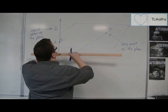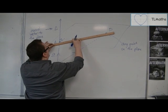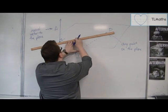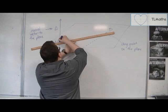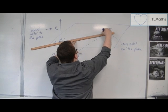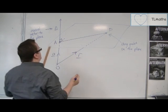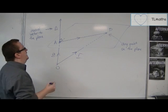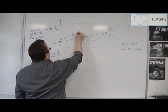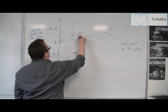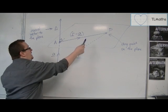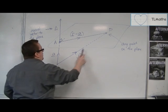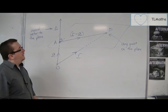Because then what I can do is I can draw in the line going from A to P, so that this vector that gets me from A to P is actually R minus A. So going from A to P, I'm going back along A, so that's minus A plus R.